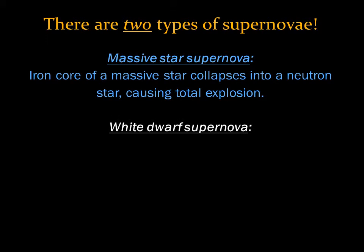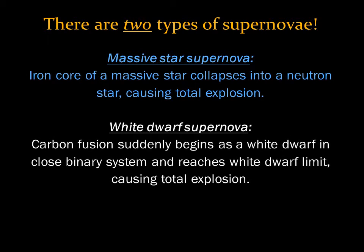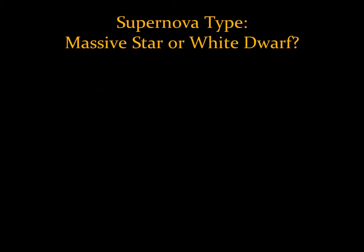A white dwarf is made mostly of carbon. If it's in a binary system and taking mass from its companion, the white dwarf can approach the Chandrasekhar limit. At this point, its temperature rises enough to allow carbon fusion to begin. The carbon fusion ignites almost instantly throughout the white dwarf, creating a detonation similar to the helium flash, but with far more energy. Astronomers can distinguish between the two types of supernovae by studying their light. Both types shine brightly, with luminosities of about 10 billion times that of the Sun. But luminosities of white dwarf supernovae fade quickly over the first few weeks, and then decline more gradually, while the decline in brightness of a massive star supernova can be more complicated.